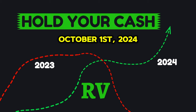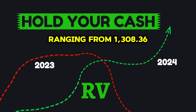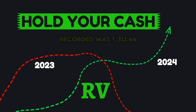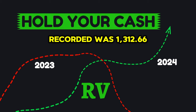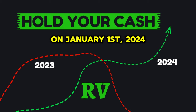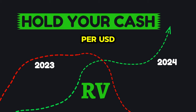2024: As of October 1, 2024, the exchange rate has shown some volatility, with the IQD ranging from 1,308.36 to 1,312.66 per USD. The highest rate recorded was 1,312.66 IQD per USD on January 1, 2024, while the lowest was 1,308.36 IQD per USD.